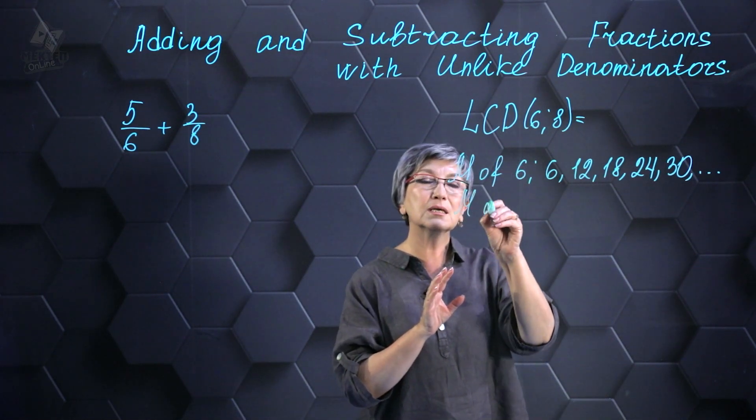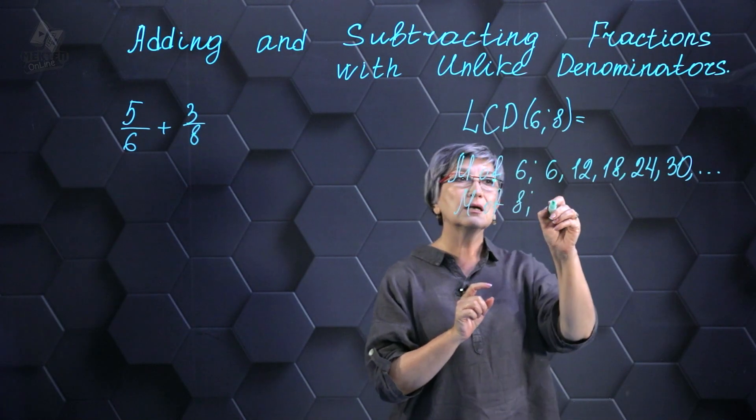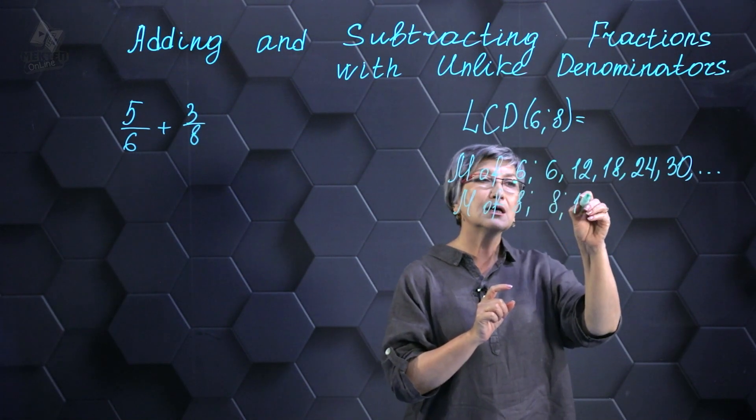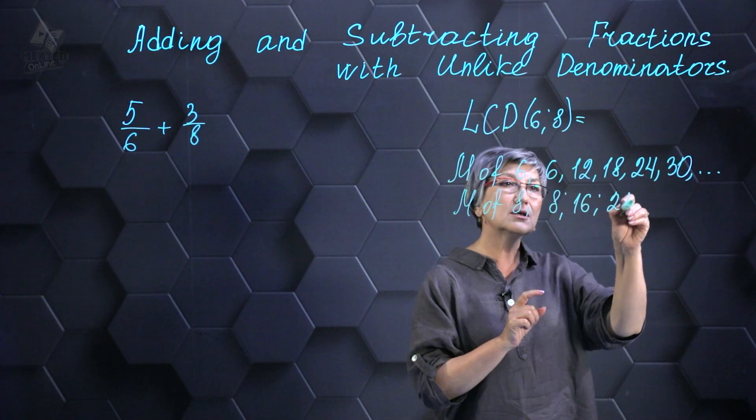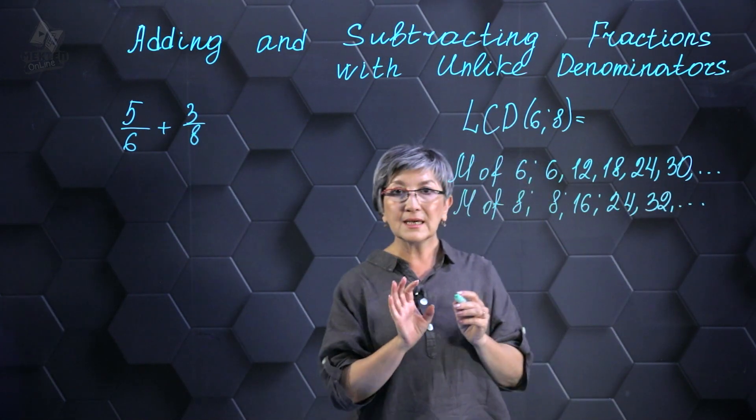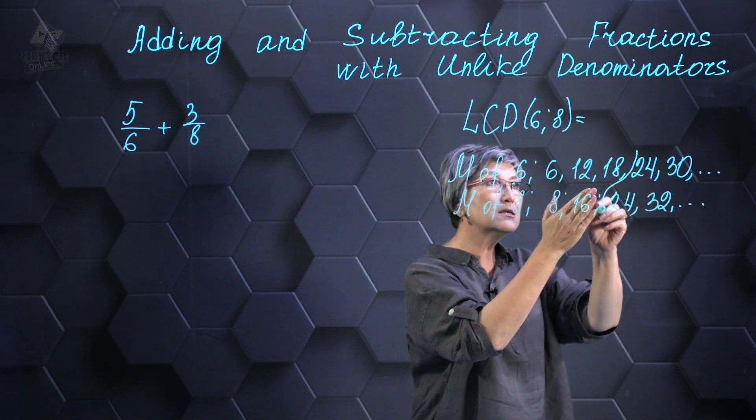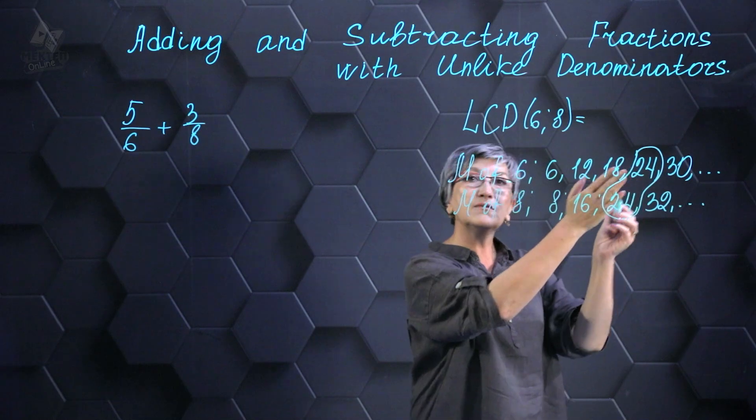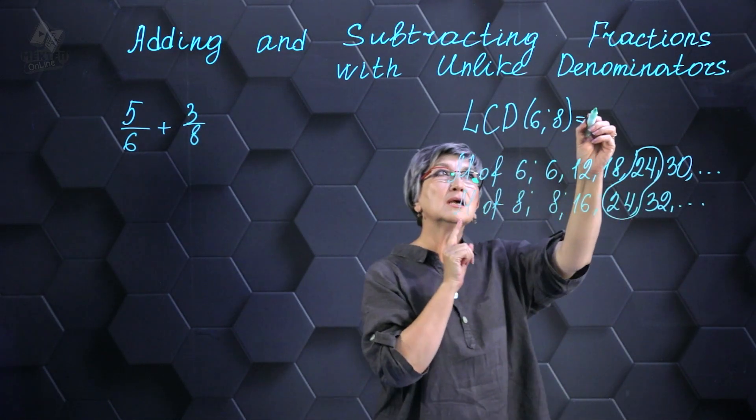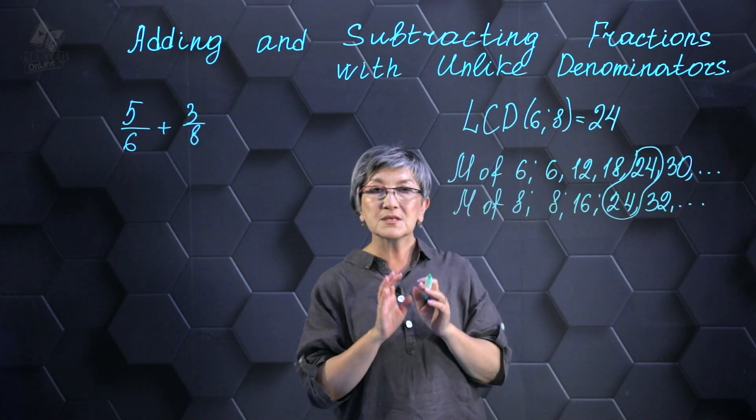Now, we are going to find a multiple for the number 8, and these are the numbers 8, 16, 24, 32, and 40, and so on. And now, what do we do? We saw that there is the number 24 here, and in this case, the number 24 is the least common multiple or the least common denominator.